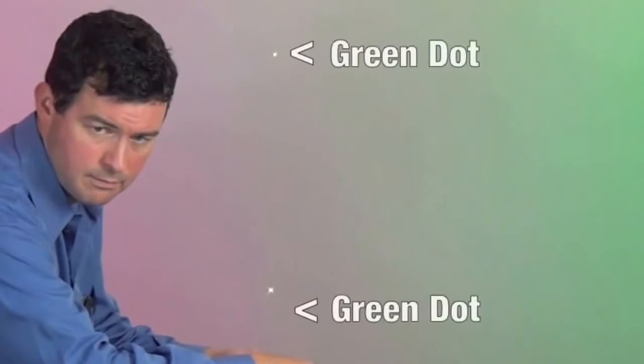When using the diffraction grating, the constructive points of light that are formed spread farther apart as the wavelength increases. This results in the spacing of the longer red wavelength points of light to be further apart than the green points of light.